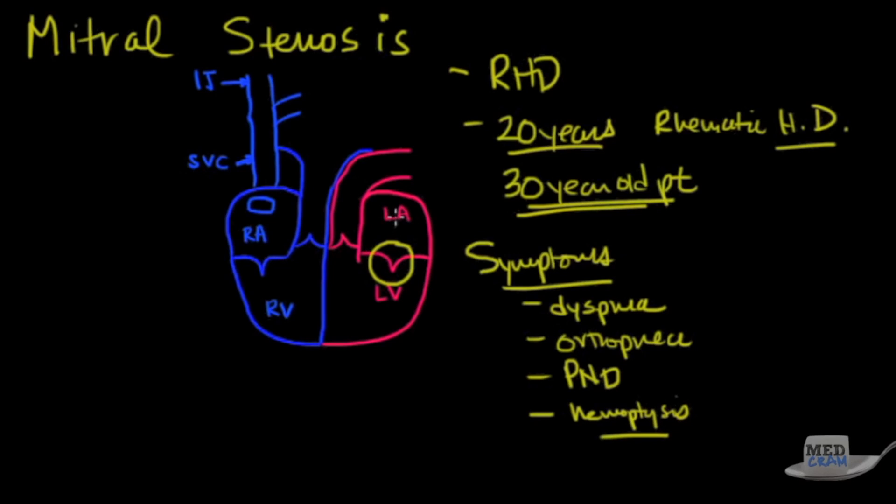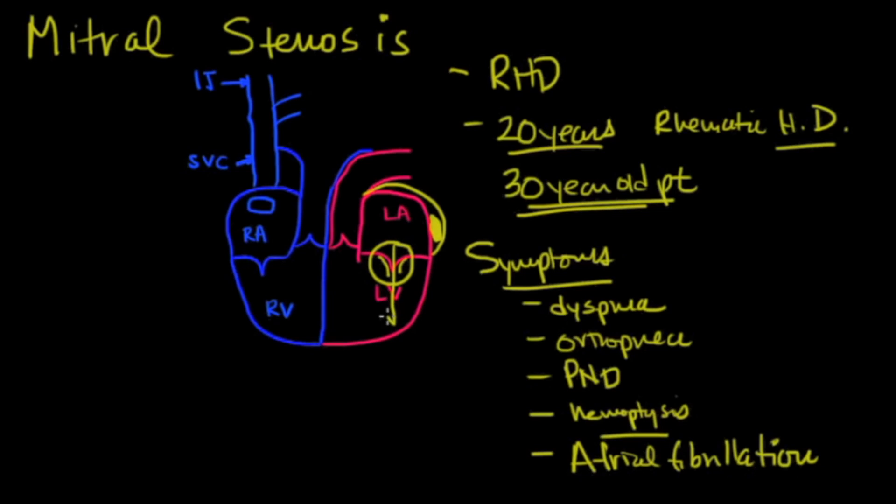This is because there's so much back pressure in the left atrium going back to the lungs that the small capillaries in the lungs actually rupture and you get pink frothy sputum. You might see hemoptysis but it's kind of rare. Because the left atrium gets so large you might also see atrial fibrillation.